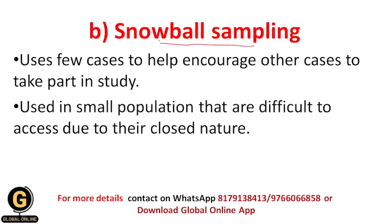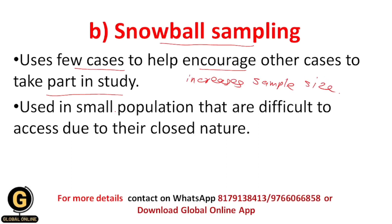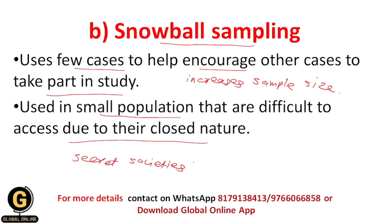The second type is snowball sampling. In this technique, we use few cases to help encourage other cases to take part in the study, which increases the sample size. It is useful for small populations that are difficult to access due to their closed nature — for example, secret societies or inaccessible professions.